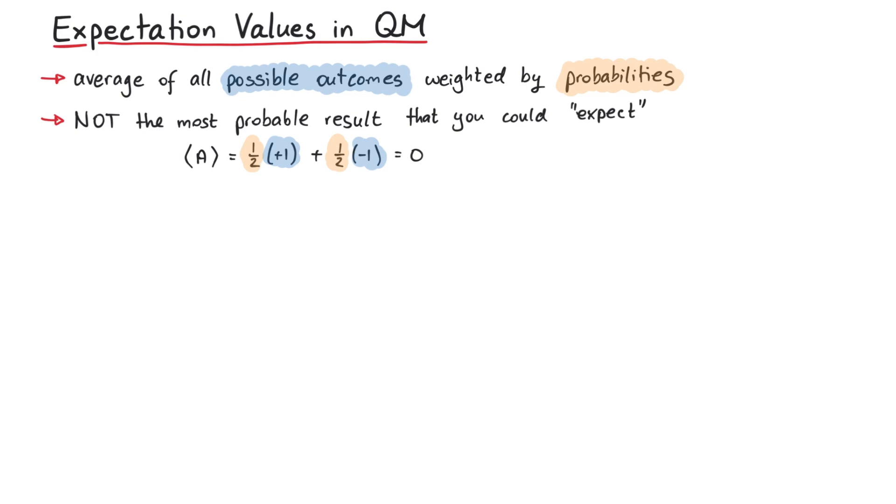Let us now talk about how we actually calculate expectation values in quantum mechanics. If we have a quantum system that is described by the wave function psi, then the expectation value of the operator A is defined like this.